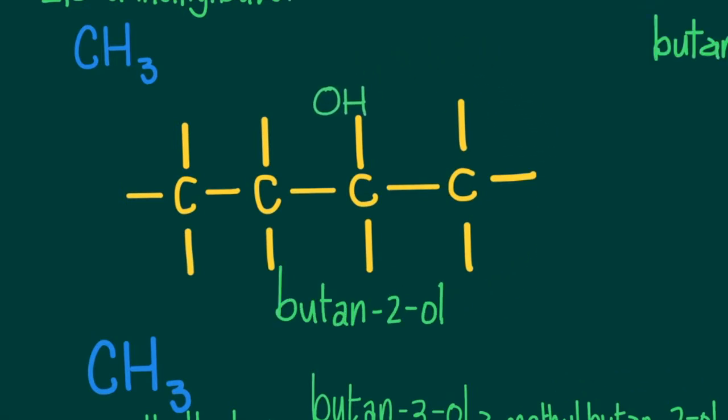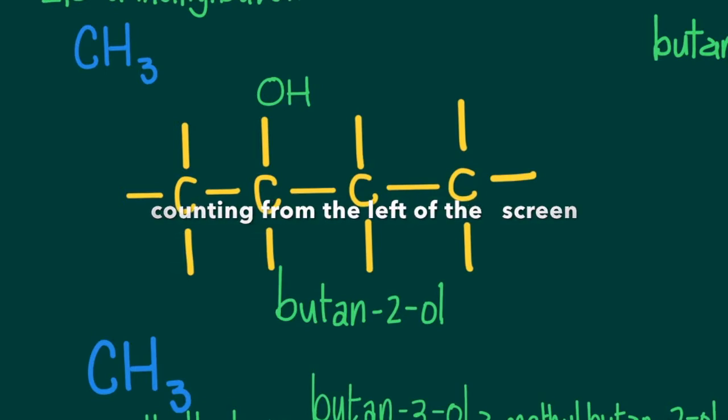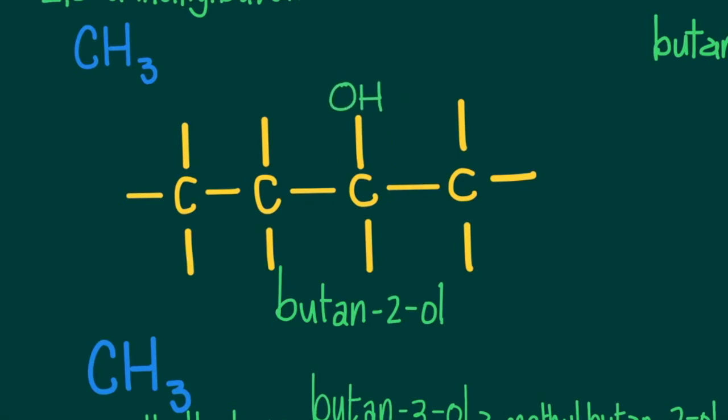If this OH were located here, here, here, or even here, then at any one of those positions, we would have a structure designated as butan-2-ol. But again for the four carbons in the straight chain, but the functional group is now located on a second carbon. And again, to keep the number as low as possible, we don't call it butan-3-ol, but we begin counting from this carbon so that this would be number two and this three and this four. And if the OH group were located here, then the structure would still be butan-2-ol.